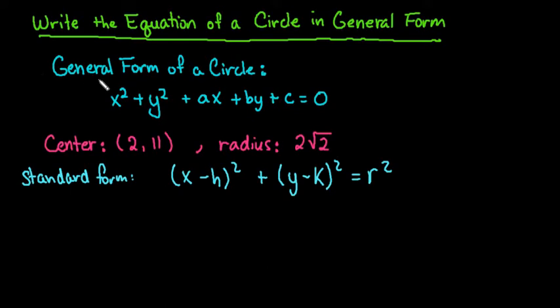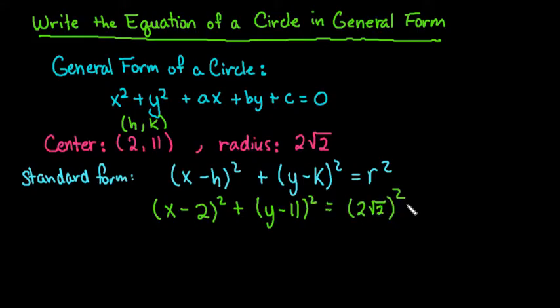So we're simply going to just plug those values in, and then in general form, we just expand the standard form. So we would have x minus 2 squared plus y minus 11 squared equals 2 square root of 2 squared.